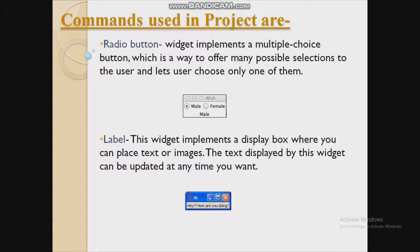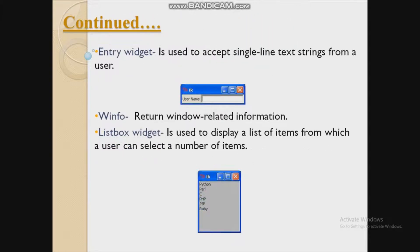Another command is label, which is used to implement a display box where you can place text or images. As shown in the image, you can see the text 'hey how are you doing'. The next command is the entry widget, which is used to accept a single line text string from a user.